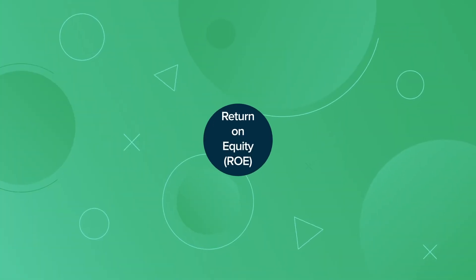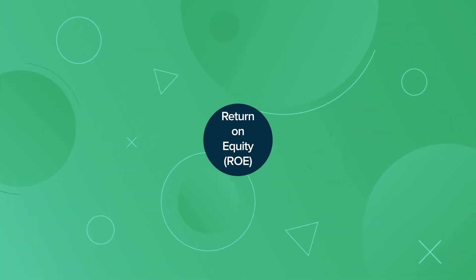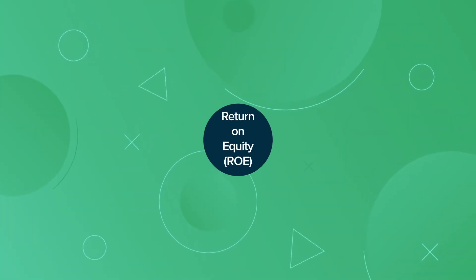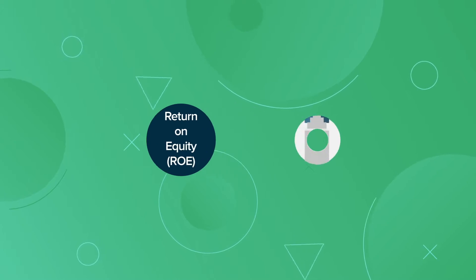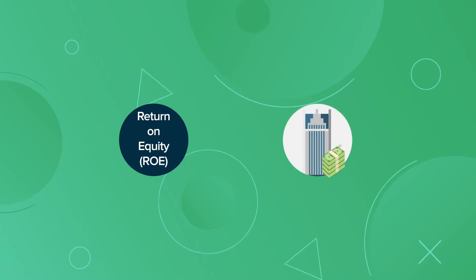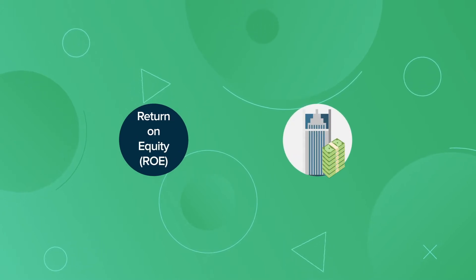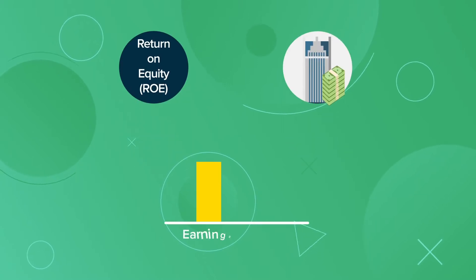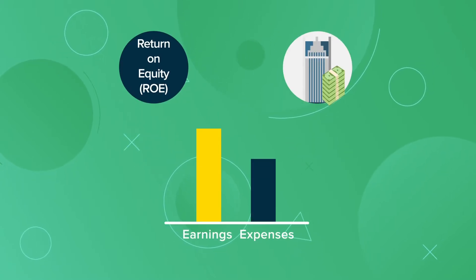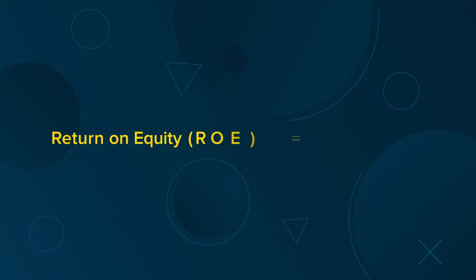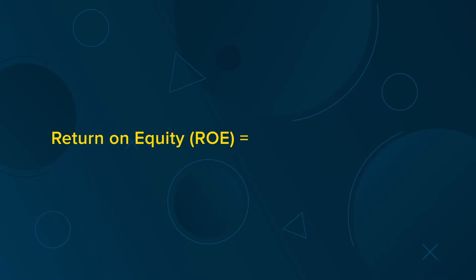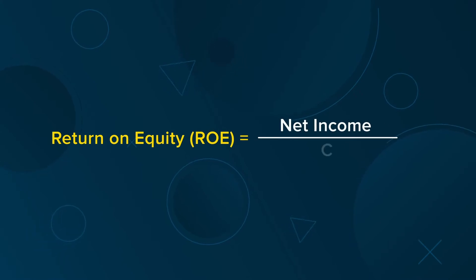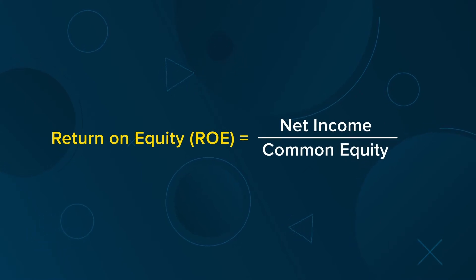Return on Equity, or ROE, is a commonly used accounting ratio that assesses a company's profitability. Ratios which calculate ROE measure a business's ability to generate earnings relative to its expenses. Return on Equity is traditionally calculated by dividing net income by common equity.